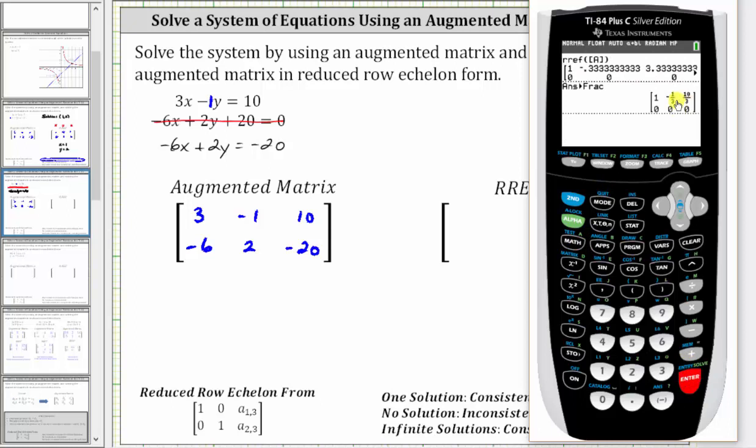Row 1 is 1, negative one-third, ten-thirds. Row 2 is 0, 0, 0. Let's record this, and then interpret the results.